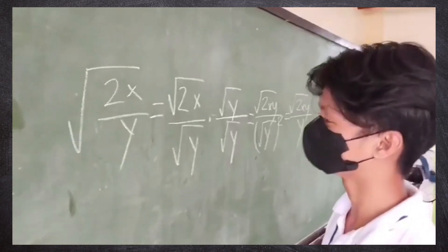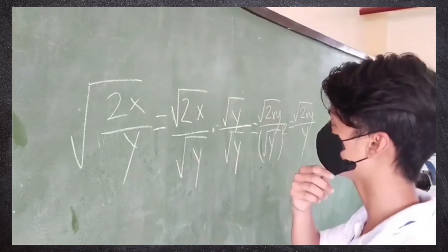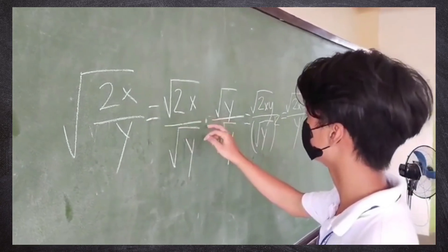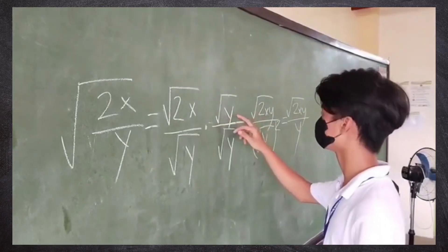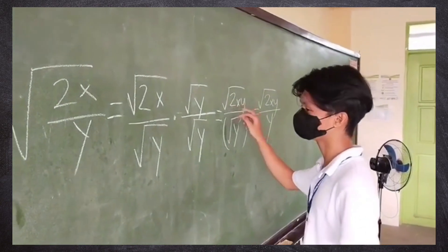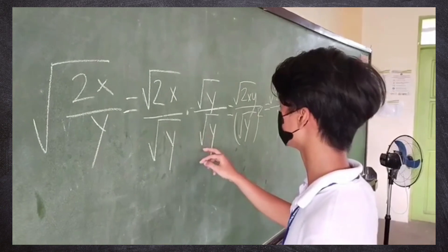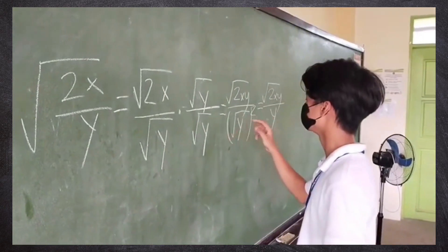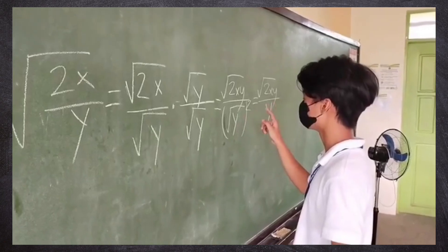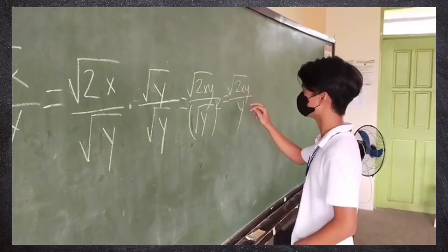For square root of 2x over square root of y: square root of y times square root of y equals y. The final answer is square root of 2xy over y.